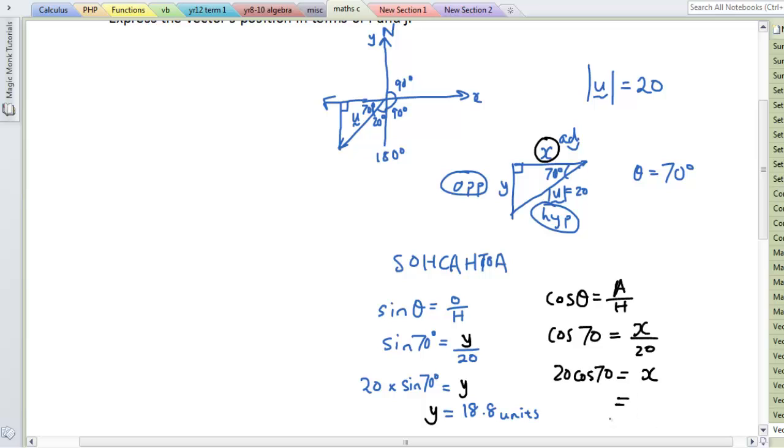And the answer is, typed out in your calculator, so 20 times cos 70, and the answer is 6.84.